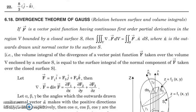Today we will see the first theorem, which is called the Gauss Divergence Theorem, which gives a relation connecting a surface integral and a volume integral — a double integral and triple integral relation. The second theorem is Stokes' Theorem, which connects a line integral and a surface integral. The third theorem is Green's Theorem, which also connects a single integral and a double integral.